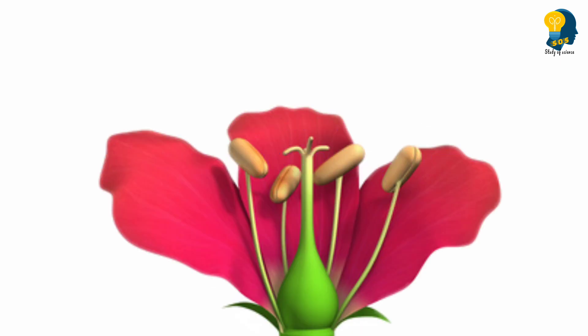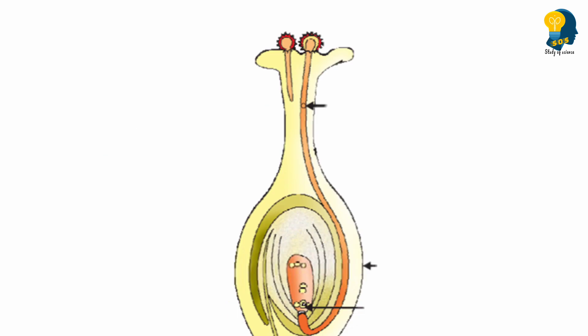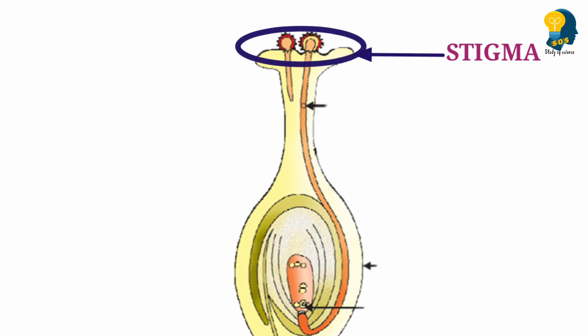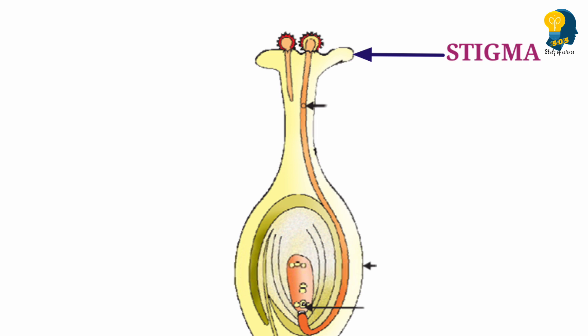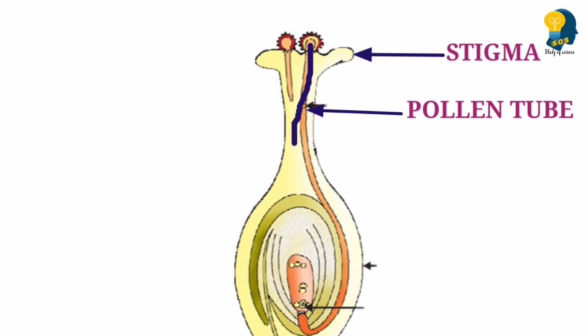Now the question is, what happens next? Let us understand what exactly happens in the next step by looking at this diagram. The stigma receives the pollen grains. These pollen grains are the male gametes. These male gametes, called pollen grains, get transferred through the pollen tube. You can observe a pollen tube in the diagram, connected to the stigma. The pollen grains from the stigma get carried through the pollen tube and reach the ovary.